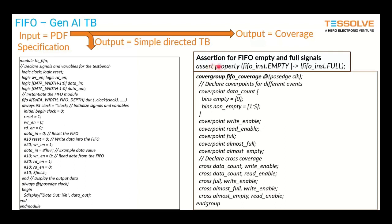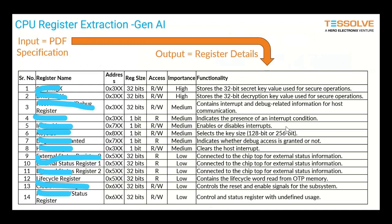We generated assertions — for example, it realized that 'empty' and 'full' couldn't both be high at the same time, and generated that assertion for us. We also generated a coverage model: it identified the control signals and created cover points on those, including some cross coverage points. All of this was automatically generated — nothing by hand — just by inputting the PDF. Models are getting fairly good at generating specific aspects of the UVM environment, though we can't get a full UVM environment from them yet, so we use automation for that.